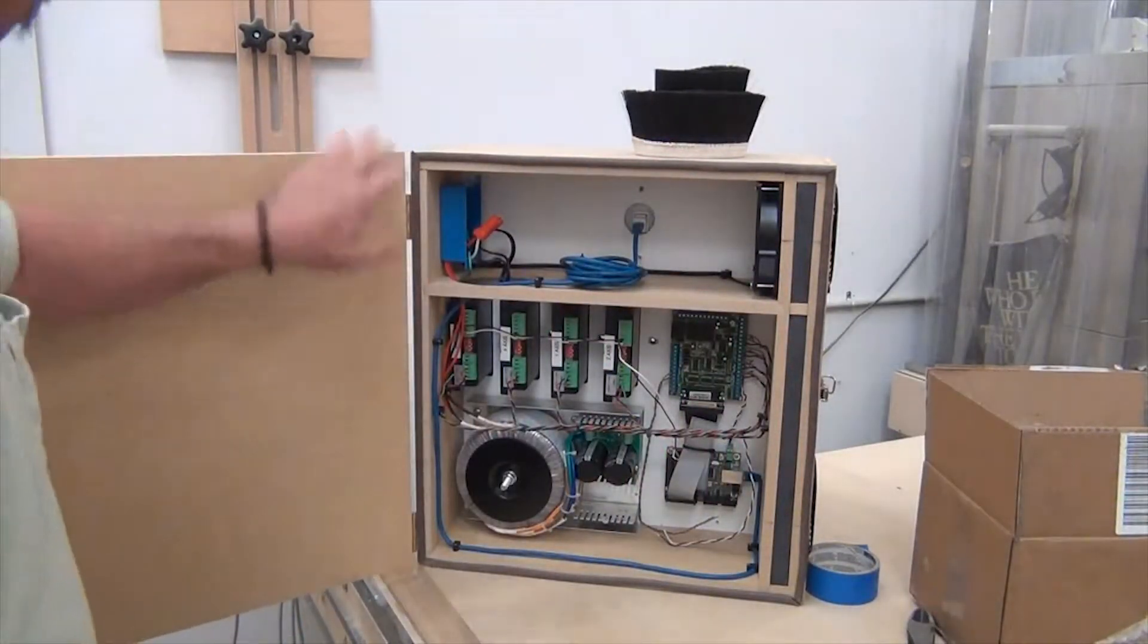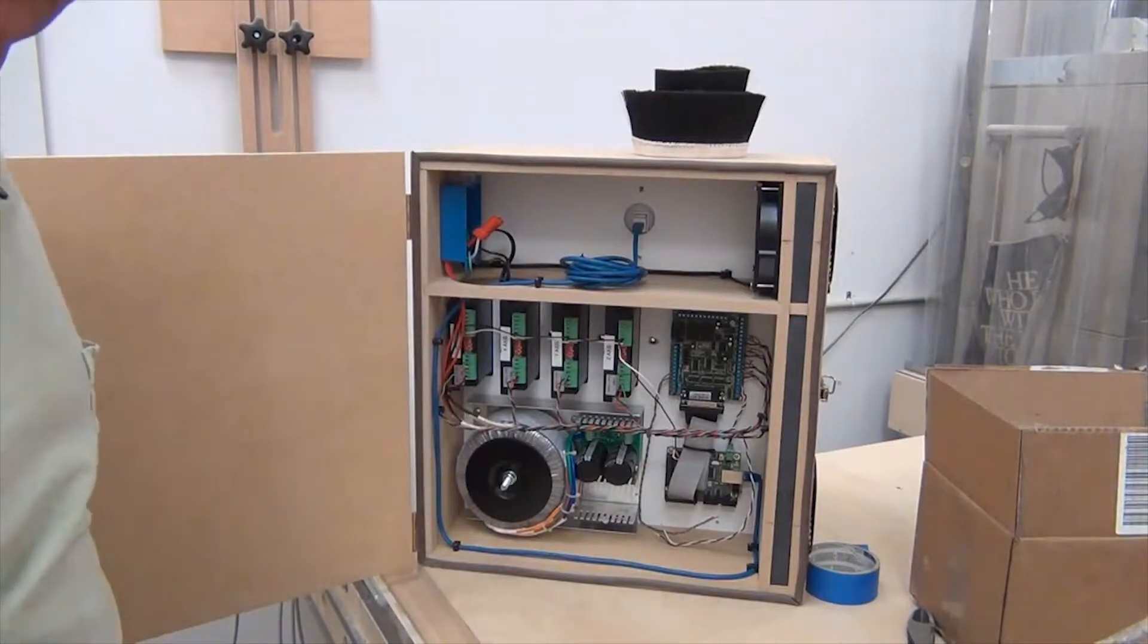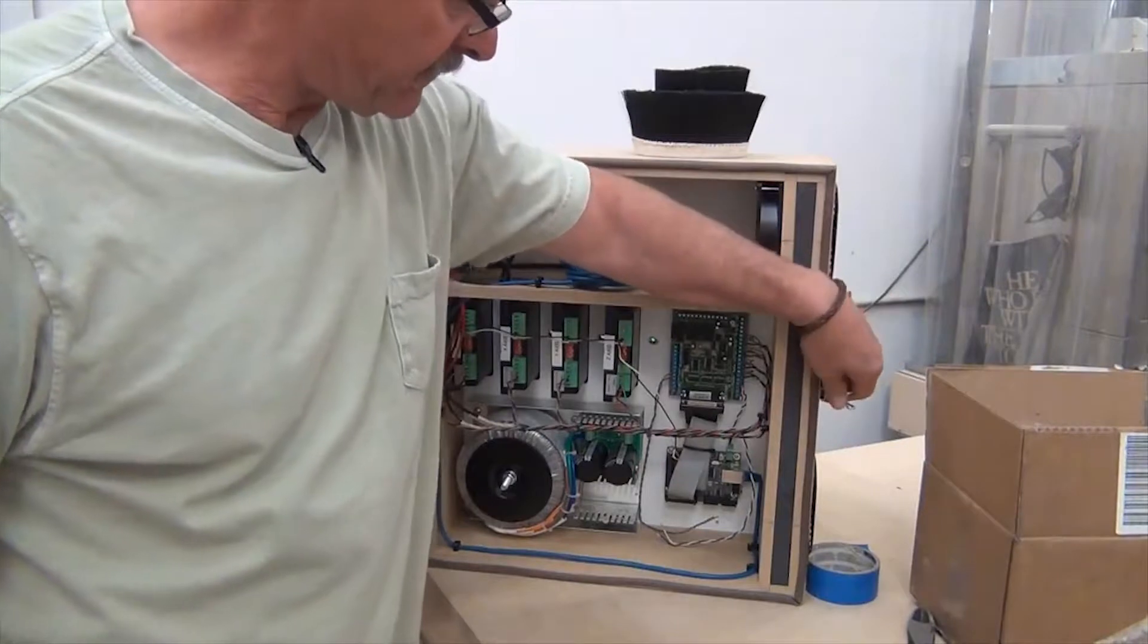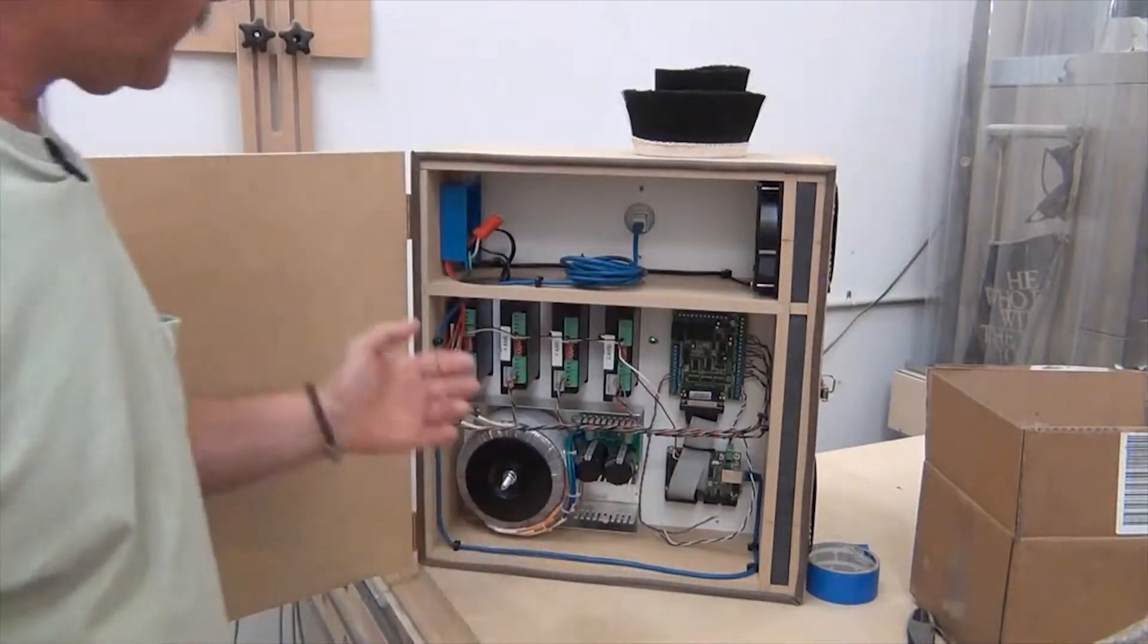So there's my controller box. Had some extra hinges, like I say I always keep stuff, never knew that I would ever need them. This little latch over here, I had that from I don't know what, but I saved it and it came in handy.